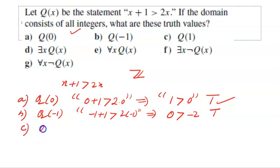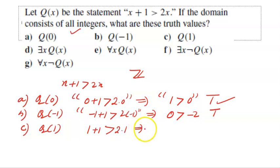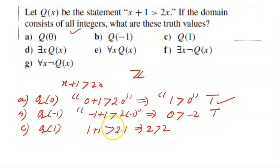For Q(1): 1 + 1 > 2×1 implies 2 > 2, which is not correct because 2 equals 2. So this is a false statement — the truth value of Q(1) is false.